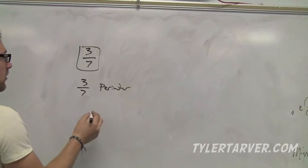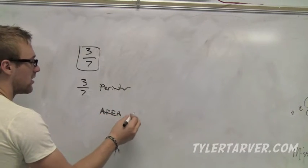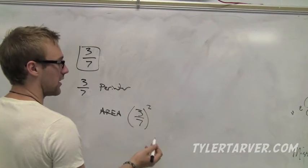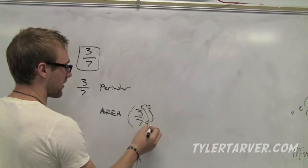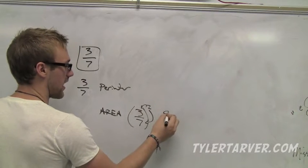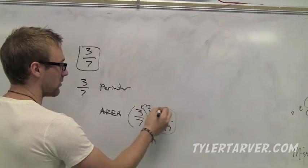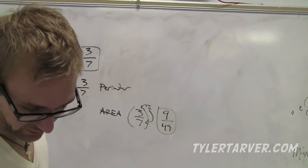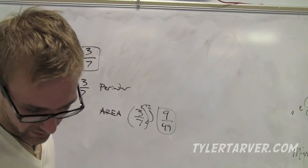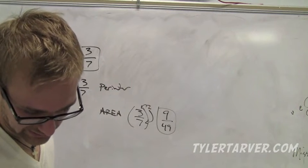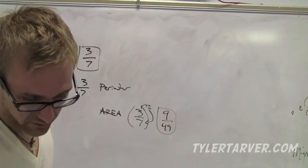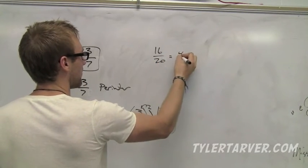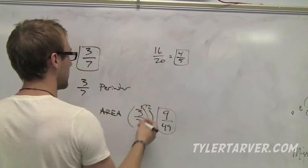Now, area is a little bit more complicated. For area, you take 3 over 7. You square it. All you got to do is you distribute that squared in there. 3 squared is 9. 7 squared is 49. That's the ratio for area. So, let me find an example for you on that one. Because that can get complicated. Let's say that we have two triangles and their ratio is 16 over 20. First off, we would reduce that to 4 over 5. That's the ratio.